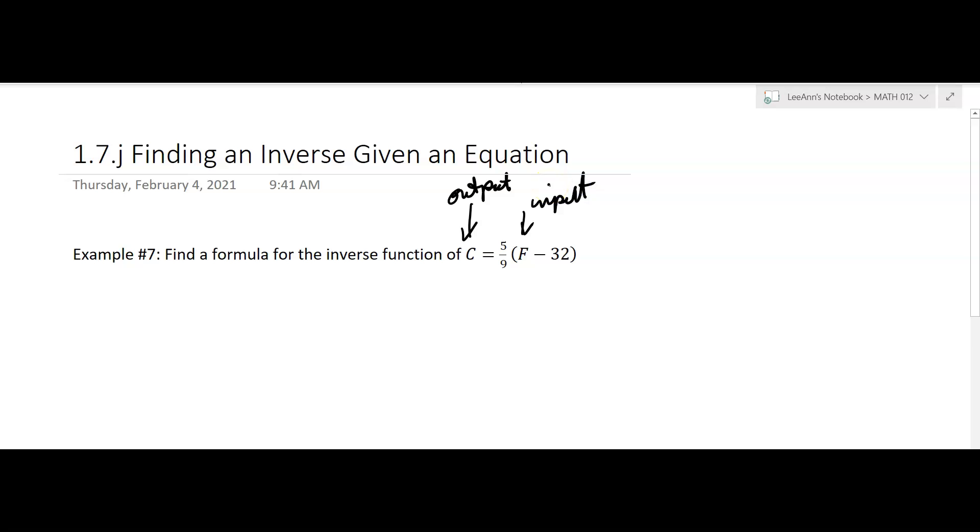The first thing I'm going to do is recopy this. After all those steps I gave you - a lot of times they do give it to us with the function notation, and then you're going to use those steps - but here this is just a formula. So I'm going to multiply by 9/5 on both sides. That's going to give me 9/5 C equals, and then those are canceling, so you just have F minus 32.